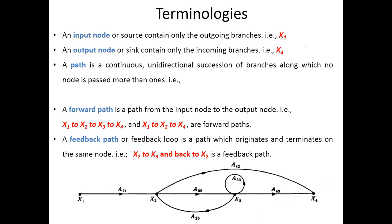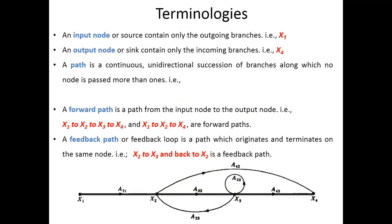The forward path goes from the input node to the output node. Forward paths include: x1→x2→x3→x4, x1→x2→x4, and x1→x4. A feedback path originates and terminates on the same node — for example, x2→x3→x2 is a feedback loop. There are multiple forward paths from x1 to x4 passing through different combinations of intermediate nodes.